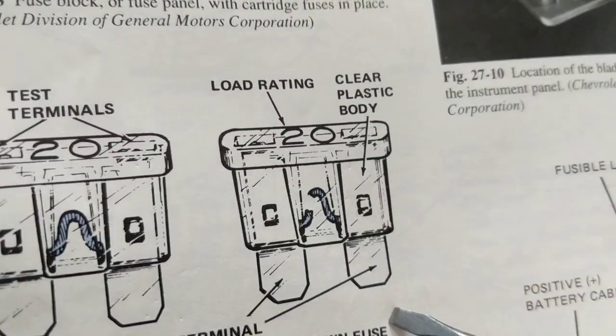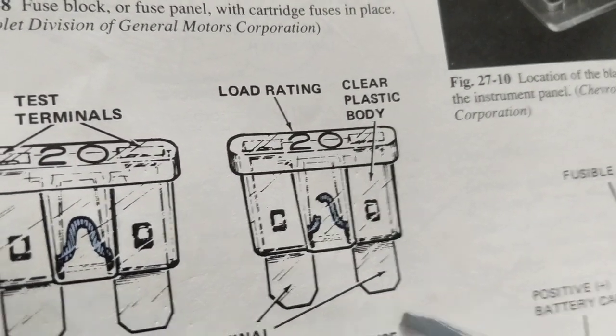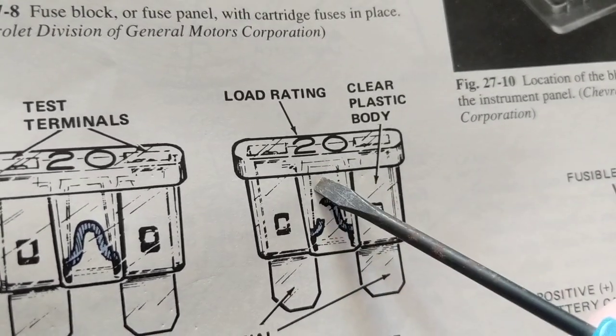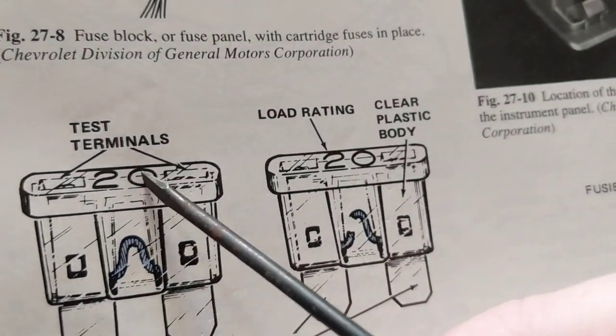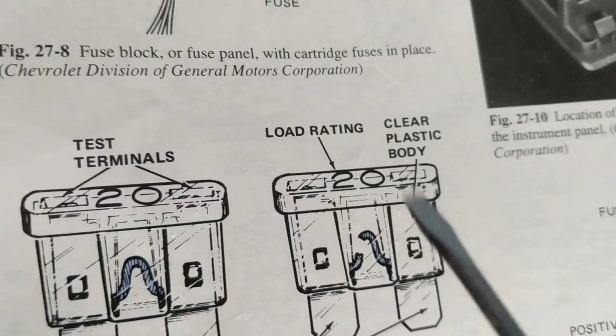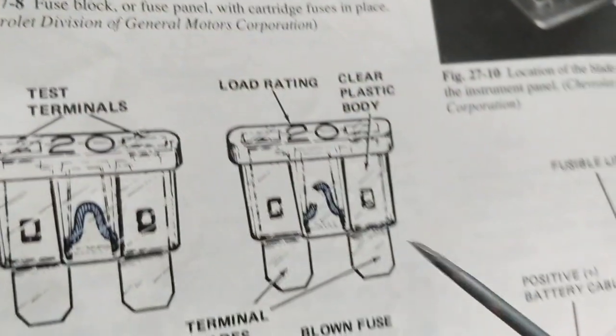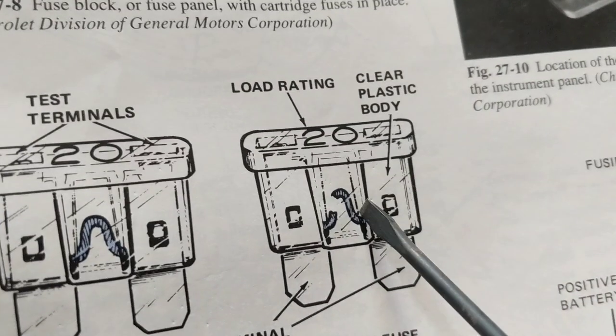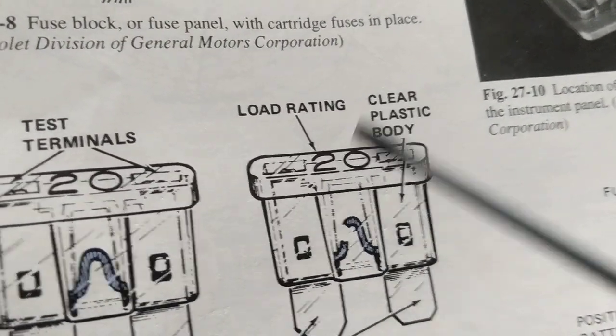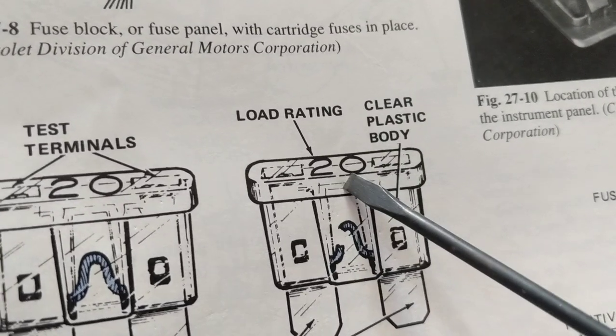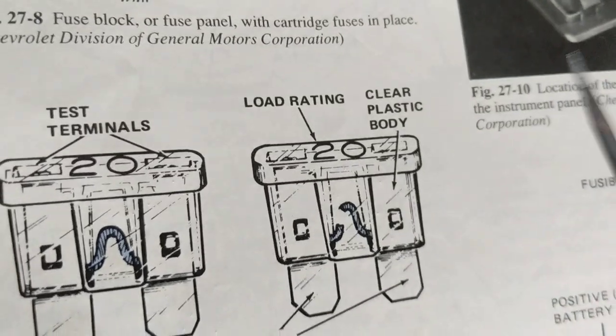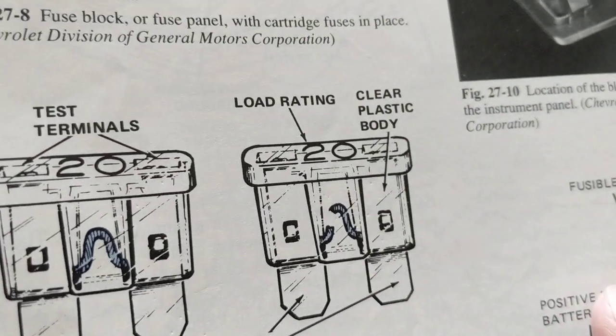If you measure anything but zero ohms on a fuse, let's say a hundred ohms, a thousand ohms, disregard that fuse. The load rating is 20 amps, it's always on the fuse itself, the rating of that fuse. One more thing, color codes in automotive fuses, they all have a color code related to 20 amps, 30 amps is a different color, 40 amps is a different color.